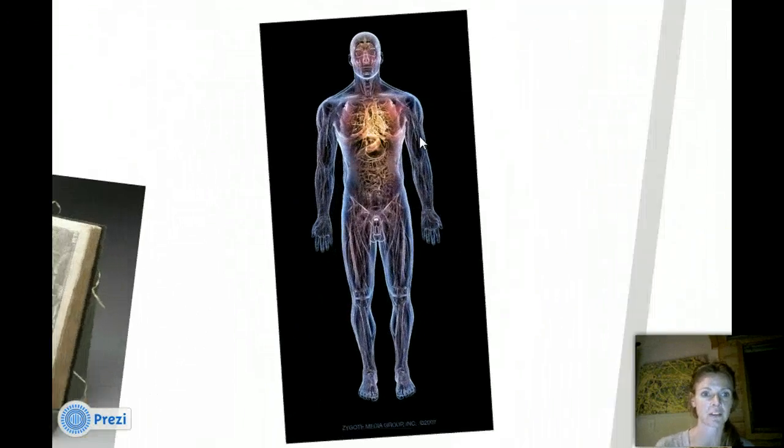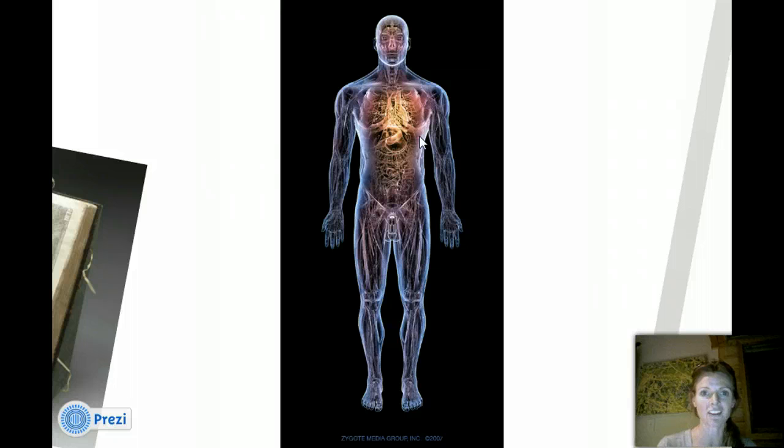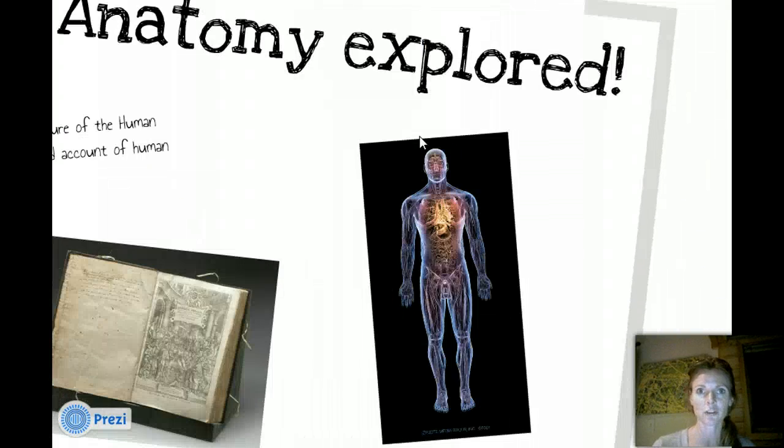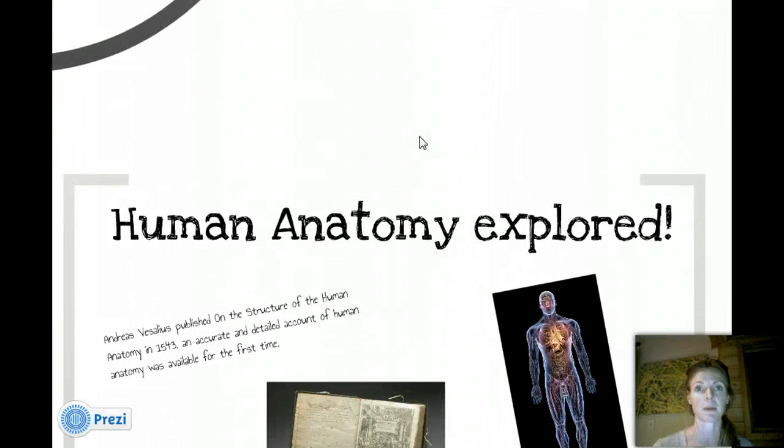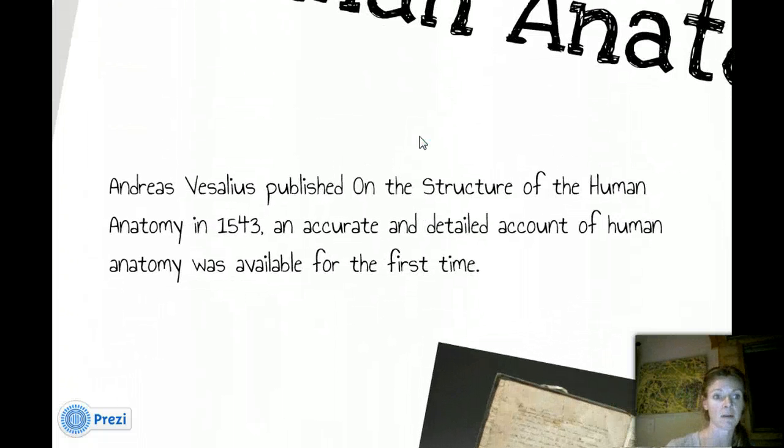All right, moving on. So, the human body. Obviously, a huge part in forensic science, because we need to know all about the human body. So, this was a huge finding, basically, when the human anatomy was explored further. So, a guy by the name of Andres Veselius, which I don't know if I'm pronouncing that right either. But he published On the Structure of the Human Anatomy in 1543. So, a little bit after the ancient Chinese, or Song Si.